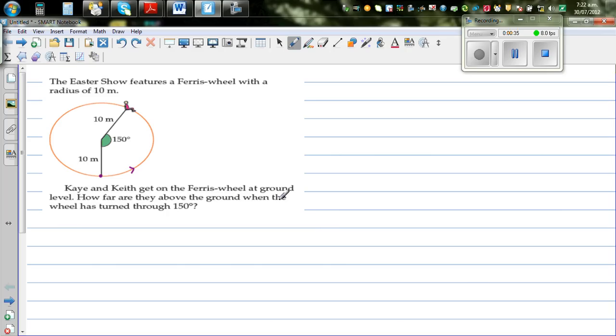How far are they above the ground when the wheel has turned 150 degrees? So the wheel has turned 150 degrees and Kay or Keith is here. The question is, you want to find how far above the ground are they. Okay, so let me draw the ground level. This is your ground level. The question is, what is this height from here to here?